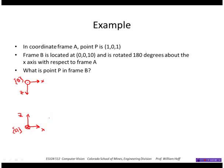So B is rotated 180 degrees about the X axis with respect to A. And we have point P at, let's call this, 1, 0, 1.